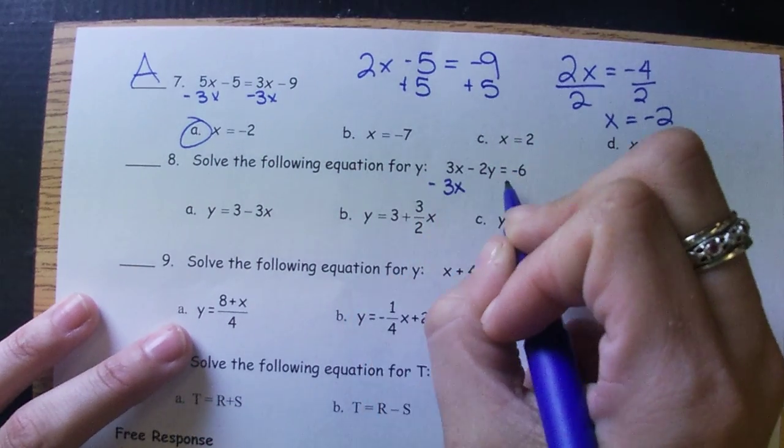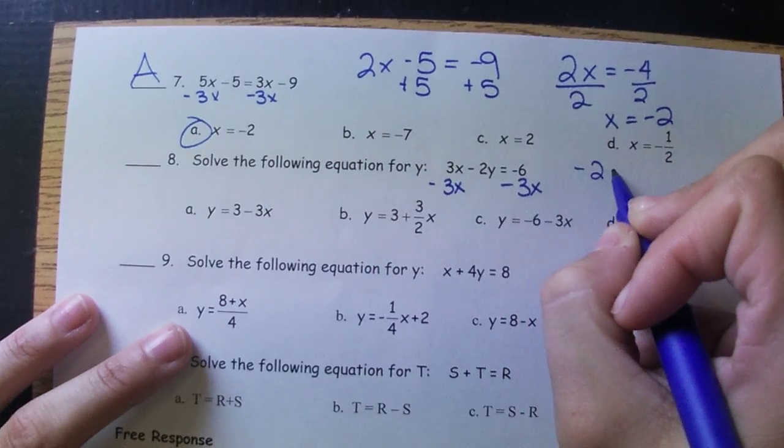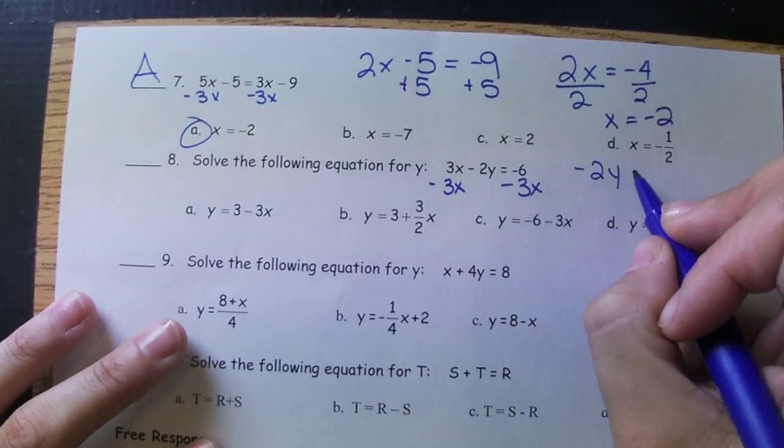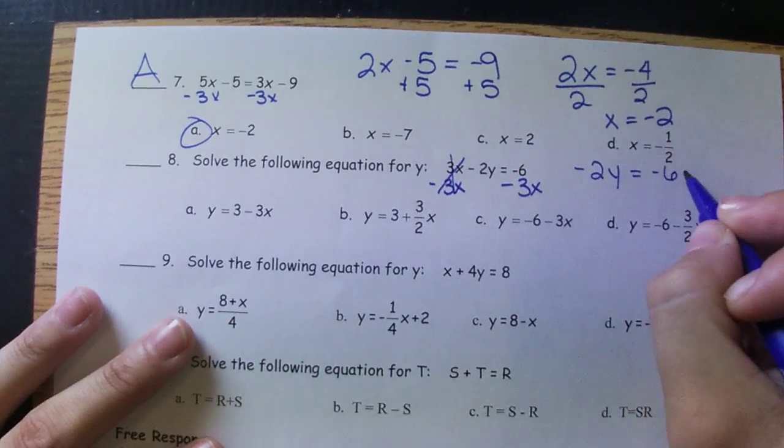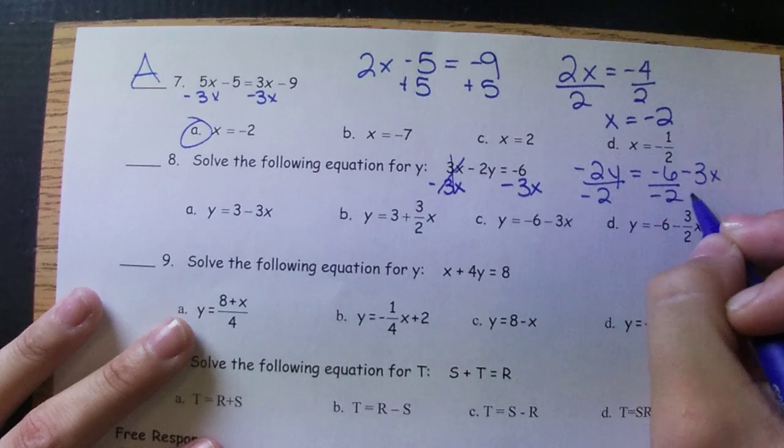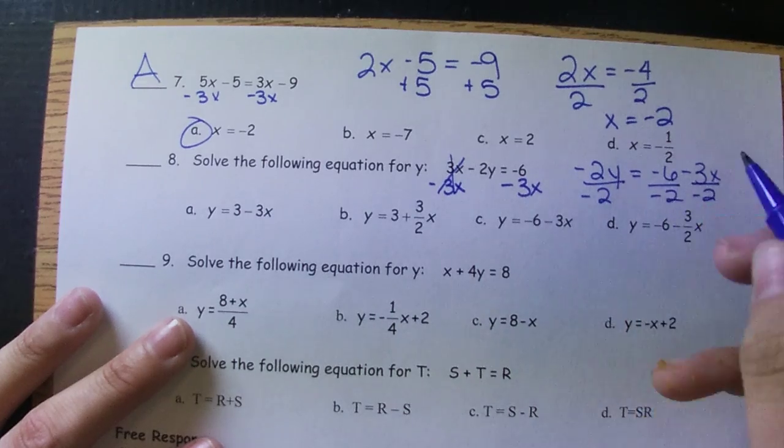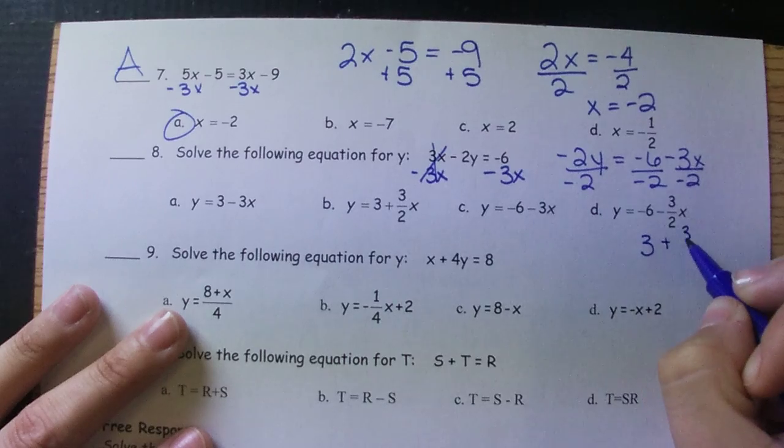So there's lots of questions on this one in class. When X and Y are together, we need to move that X first with the opposite sign. So this cancel, that leaves us with a negative 2Y equals a negative 6 minus 3X. And then we'll divide by the negative 2. So two negatives make a positive 3. And again, two negatives here make a positive 3 halves.